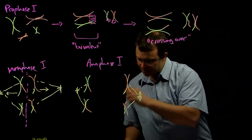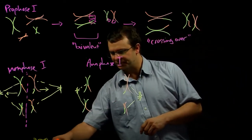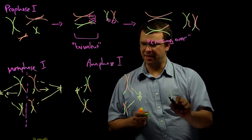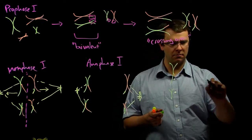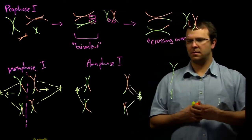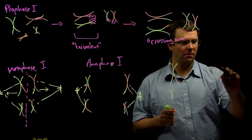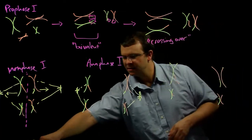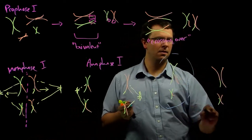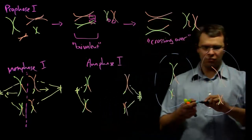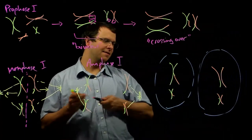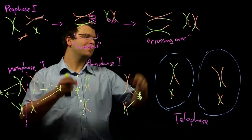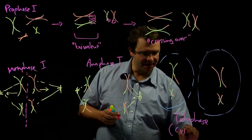And then the cell goes ahead and it divides. And now we end up with two. And so once the cell divides, we end up with two haploid cells. And just as with mitosis, we call this telophase and the splitting of the cell is cytokinesis.